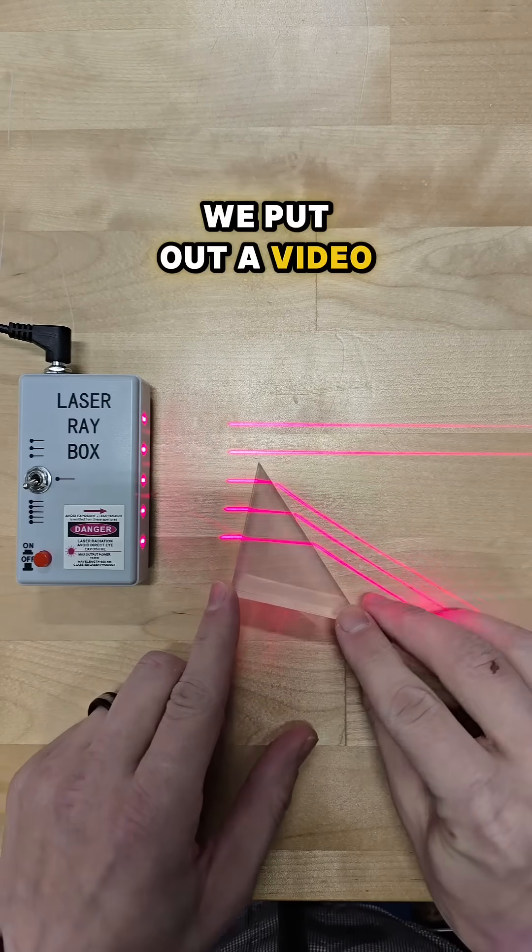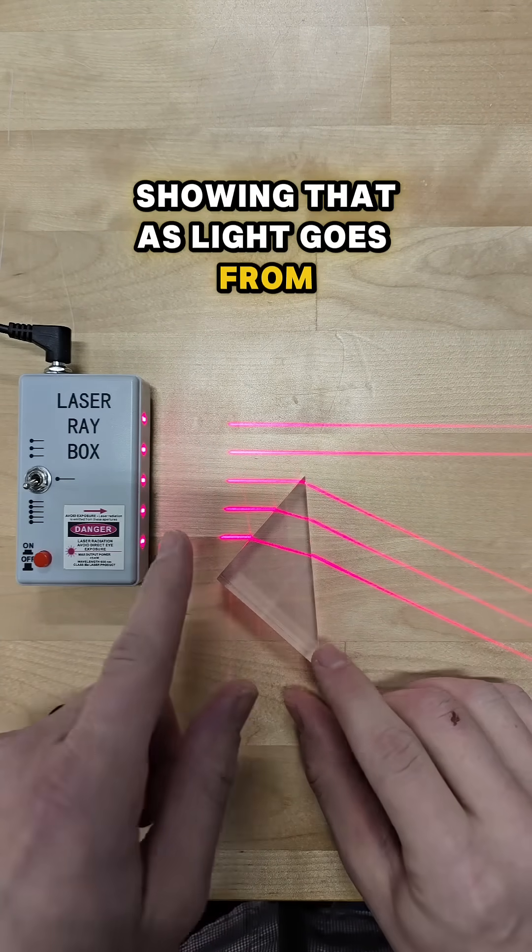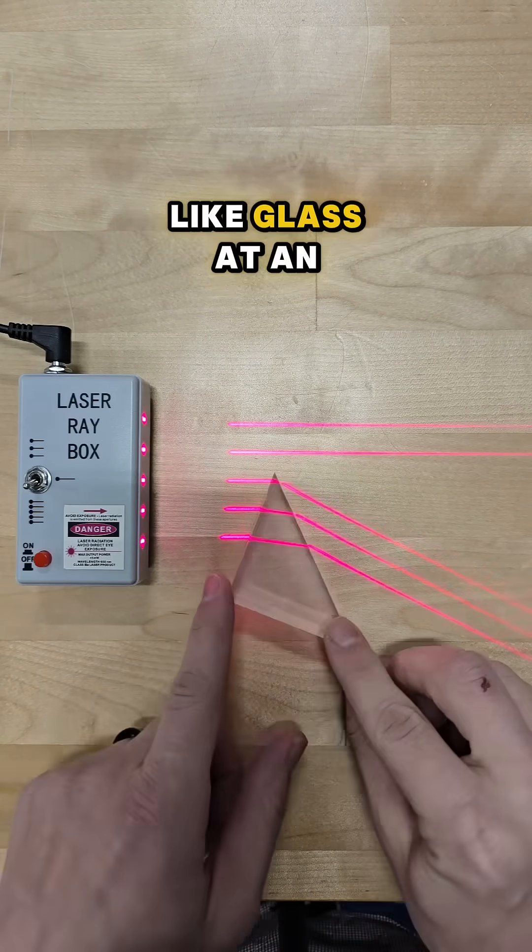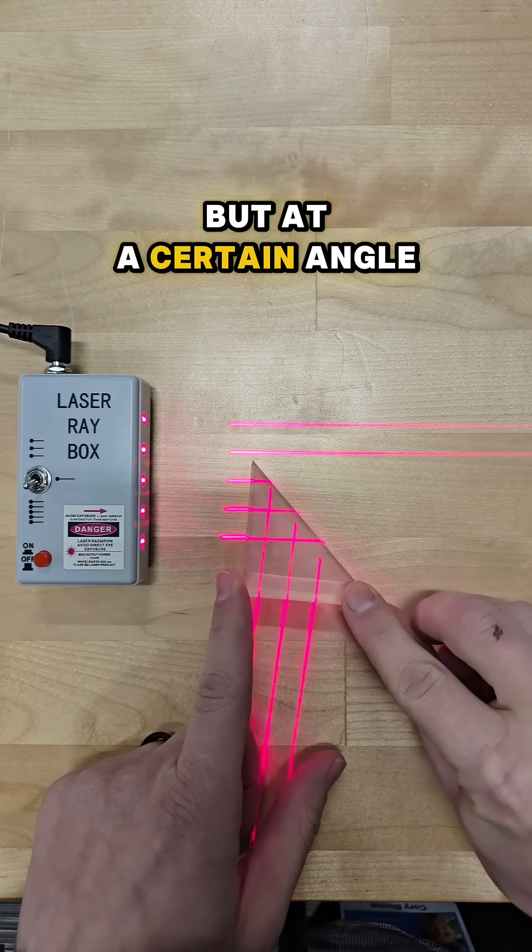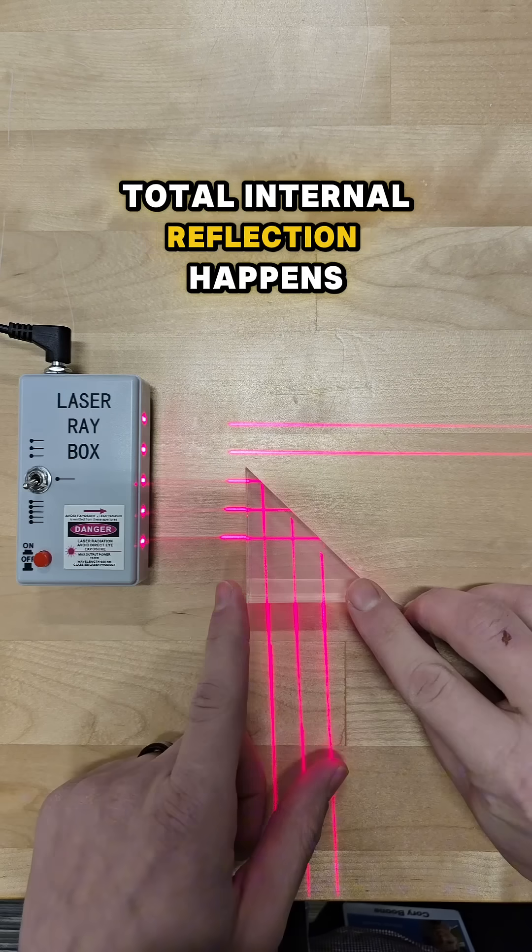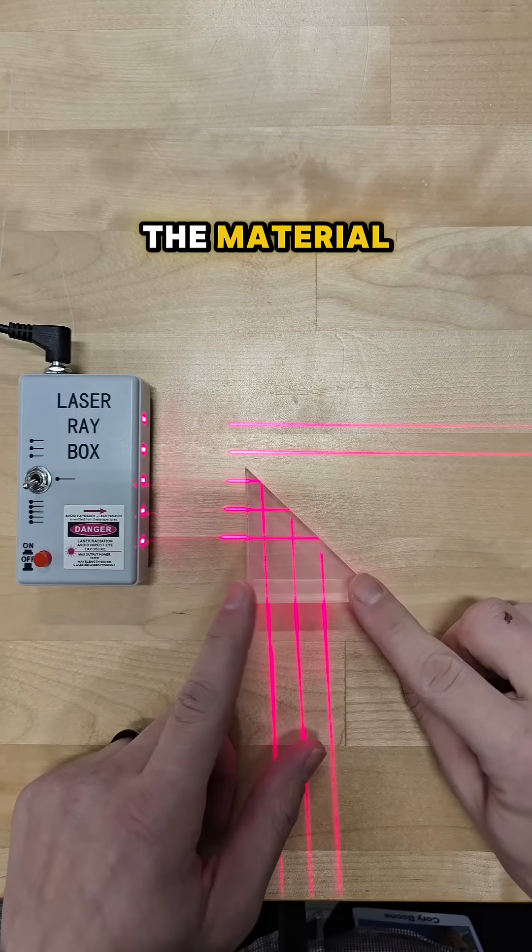A few days ago, we put out a video showing that as light goes from air to a transparent material like glass at an angle, it bends or refracts. But at a certain angle, total internal reflection happens and it just bounces inside of the material.